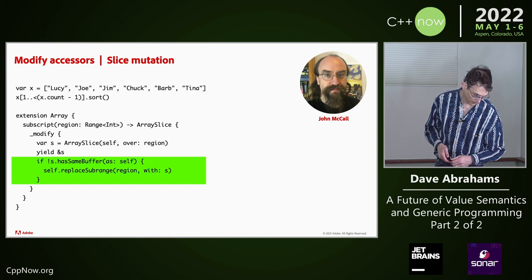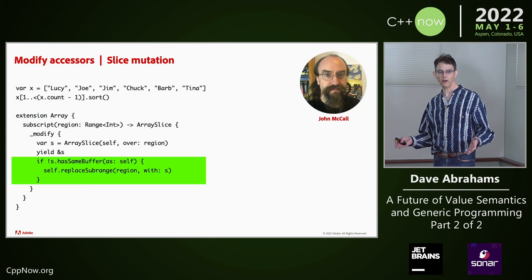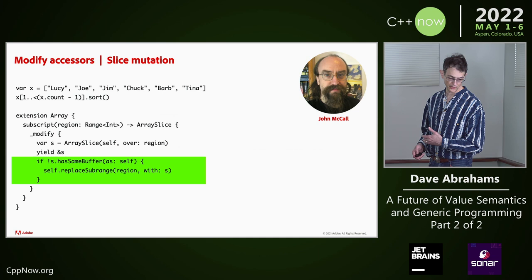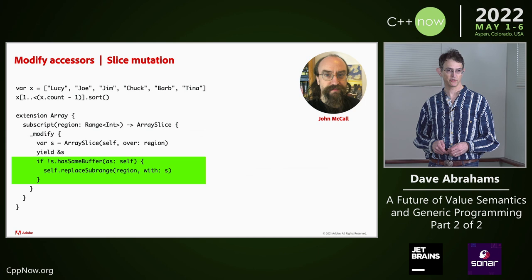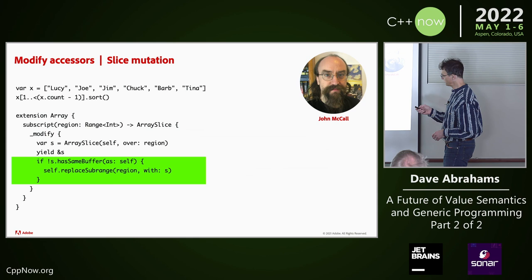We wouldn't be able to do this with references in C++, and as we know, proxies don't work. Because this slice is holding bits of the array, it can't last past the scope of the mutation. Closure captures definitely bring up lifetime issues — this is essentially using a closure. So let's talk about closure captures.